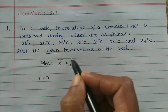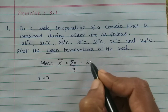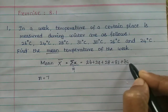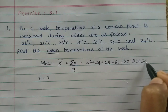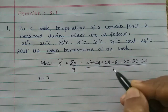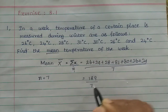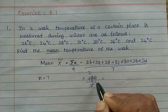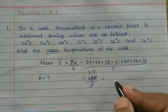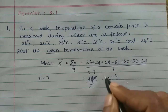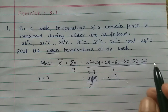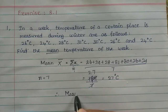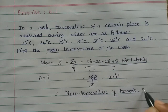So X-bar equals the sum of all values divided by n. That is 26 plus 24 plus 28 plus 31 plus 30 plus 26 plus 24, divided by 7. The total is 189 divided by 7, which gives 27 degree Celsius. Therefore, the mean temperature of the week is 27 degree Celsius.